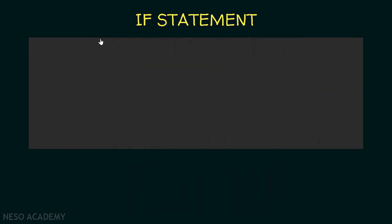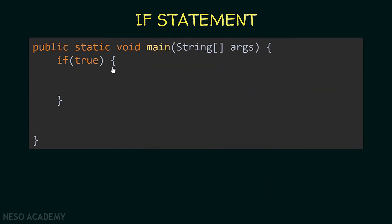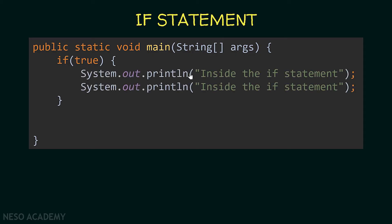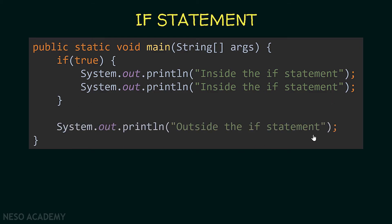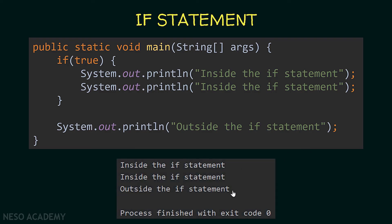Now let's see another example. Suppose we have this code where I put braces for the if statement because I want more than one statement inside it. The condition is true, and inside we have two print statements. Outside the braces there is one more statement. If we run the program, we will see three strings printed. The two inside statements execute because the condition is true, and after the if statement finishes, we continue and execute the outside statement.